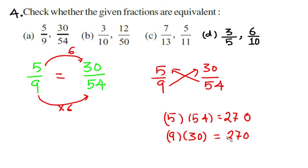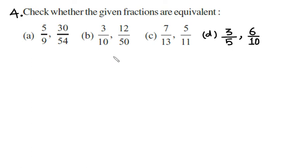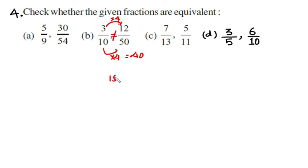Because these cross multiplication values are equal, these two fractions are equivalent fractions. For part B, three tenths compared to twelve fiftieths: using cross multiplication, three times 50 is 150, and ten times 12 is 120. These cross-multiplied values are not equal, so these two fractions are not equivalent fractions.